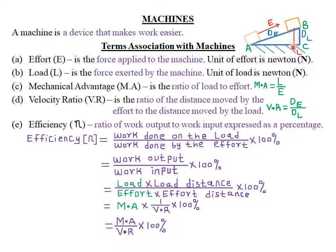The load is denoted by capital L, which is simply equal to the weight of the body — that is, the product of the mass of the body and the gravitational force. The SI unit of the load is simply the newton, denoted by capital N.